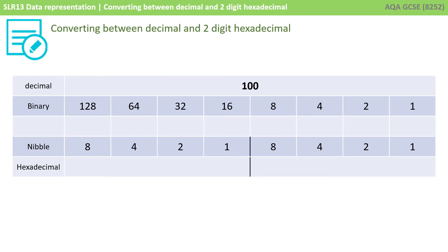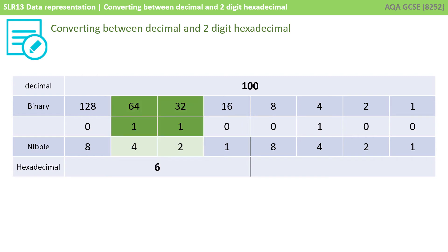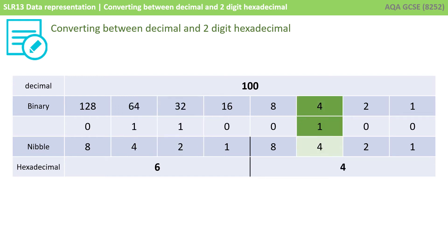OK, one final conversion then. Pause the video — you should have got this nailed by now — then unpause to see if you've got it right. So there's 100 written out in binary. I start with my left-hand nibble and I have a four and a two, so that's a six. I then go to my right-hand nibble and I just have a single four. So the decimal number 100 is represented by 64 in hex. Remember, that's six-four, not sixty-four.